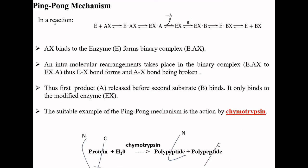In the ping-pong mechanism, substrate AX binds to the enzyme first, forming the EAX binary complex. An intramolecular rearrangement takes place, converting EAX to EXA. The EX bond forms and the AX bond is broken, so the first product A is released before the second substrate binds. The second substrate B only binds to the modified enzyme EX.